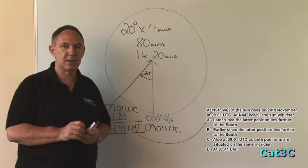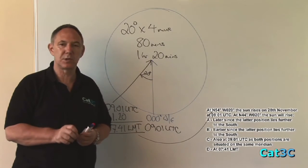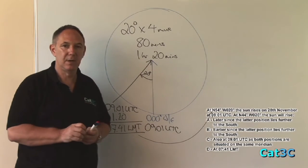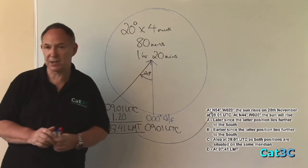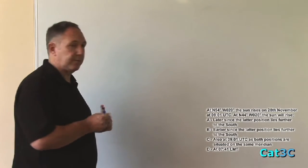However, the question's asking us the time of sunrise at north 44 degrees, which is 10 degrees further to the south. In order to do that, I'm going to draw a simple diagram which may assist you. What we need to do is to draw a side view of the earth.